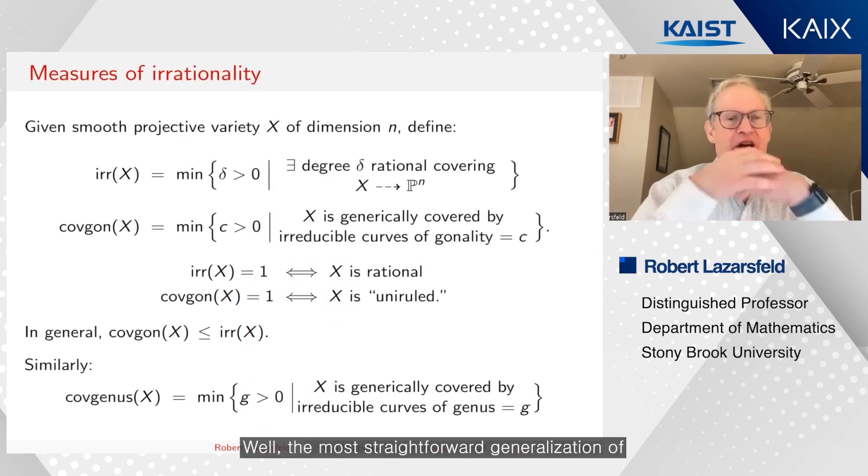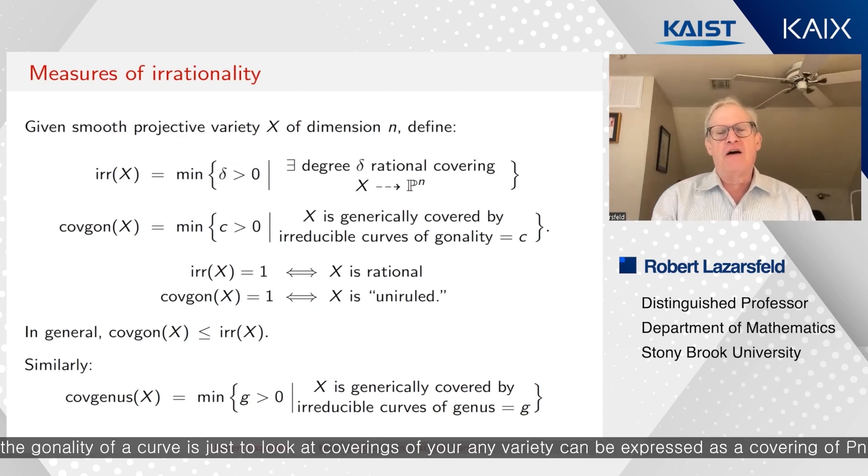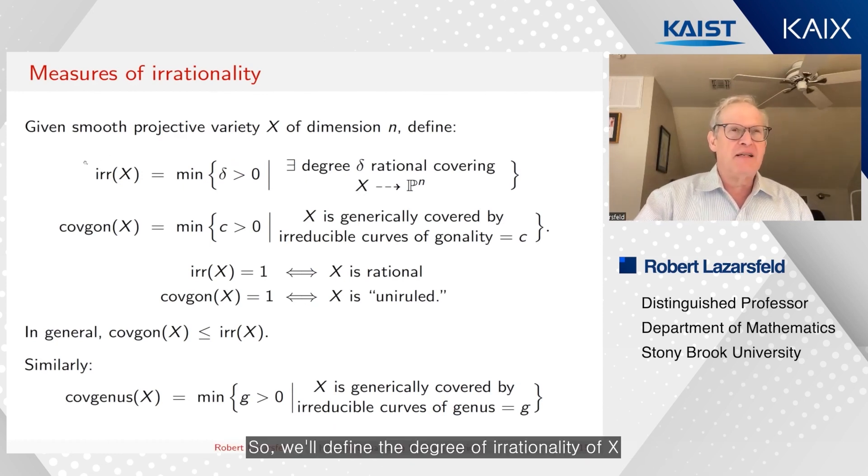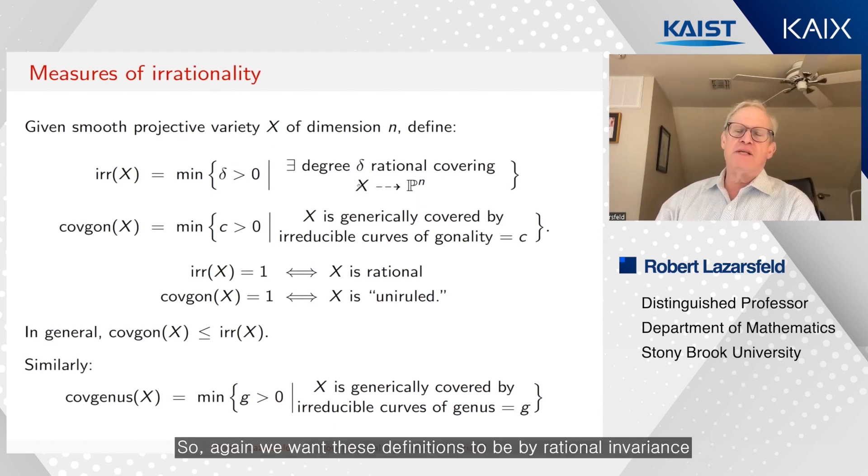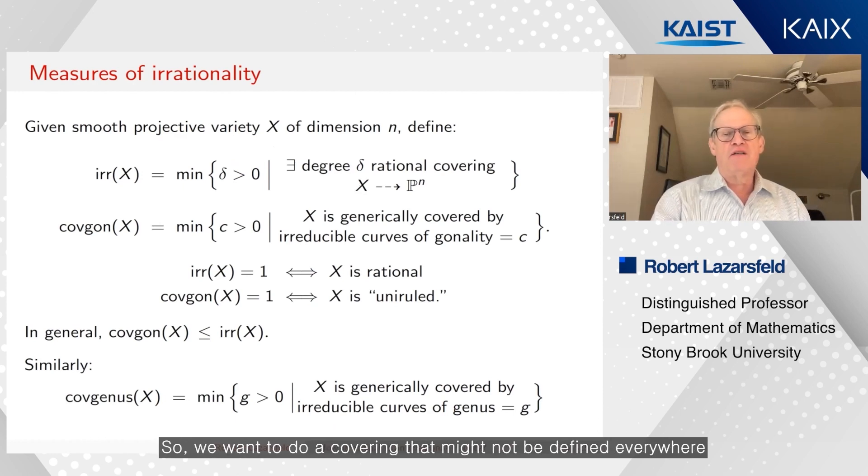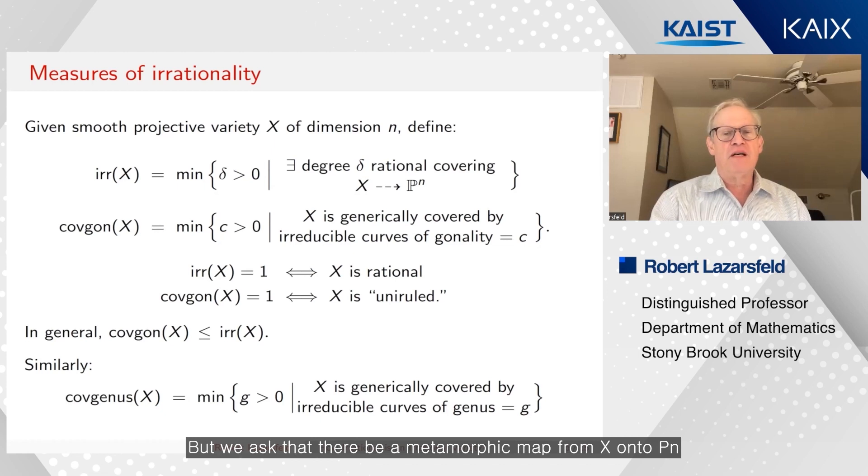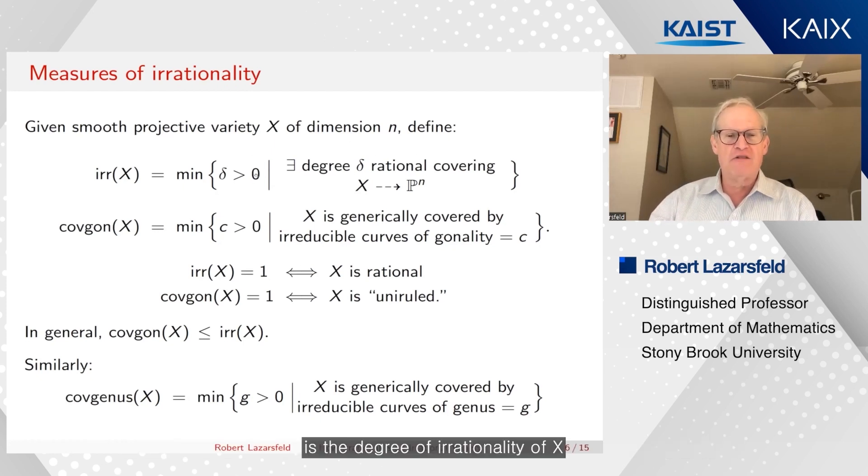Okay, well, the most straightforward generalization of the gonality of a curve is just to look at coverings of your, any variety can be expressed as a covering of P^n, and we could look at the minimal degree of that covering. So we'll define the degree of irrationality of X to be the least degree so that you can express your X rationally as a branch covering of P^n. We want these definitions to be by rational invariance. We ask that there be a meromorphic map from X onto P^n so that the general point has delta pre-images. And the least such delta is the degree of irrationality of X.